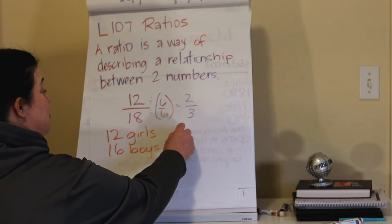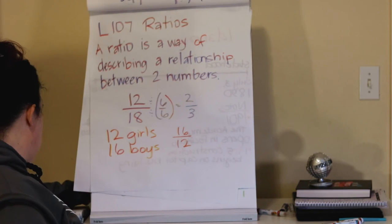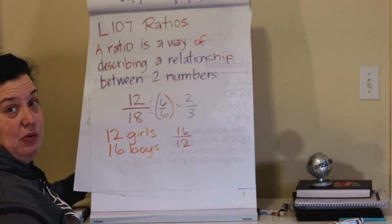Yeah. We're going to put 16 on top, and then we're going to put the 12 on the bottom. Now let me ask you, what is the greatest common factor of 16 and 12?